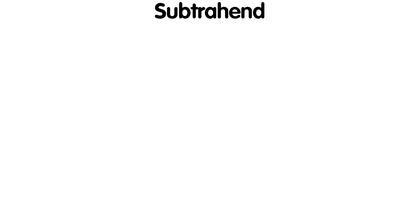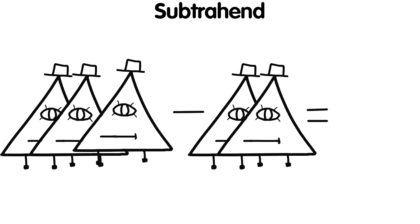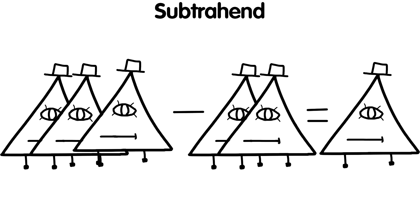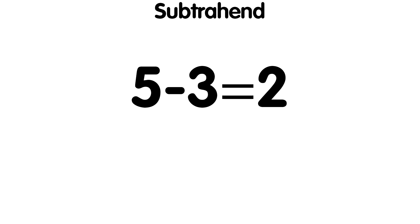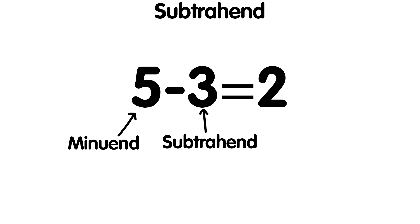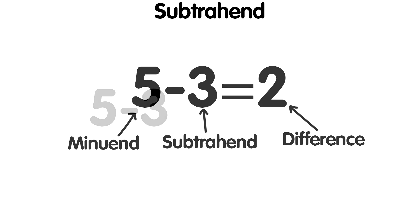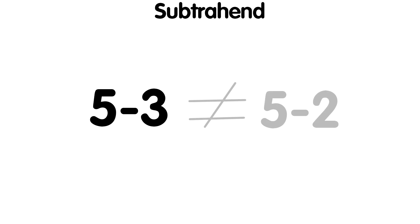Subtraction is an operation that finds the difference between two numbers. For example, 5 minus 3 equals 2. Here 5 is the minuend, 3 is the subtrahend, and 2 is the difference — that is the result. But when you change the terms in subtraction, the result changes: 5 minus 2 equals 3.